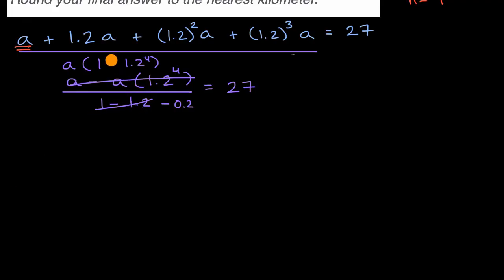And let's see, we can multiply both the numerator and the denominator by a negative one. And so, this would get us to A times, and I'll put the A out of the fraction. A times, so I'll just swap the order here and get rid of this negative. 1.2 to the fourth power minus one over 0.2 is equal to 27.